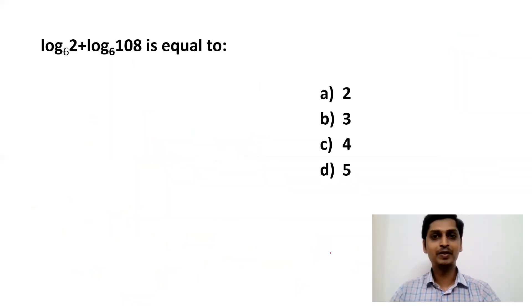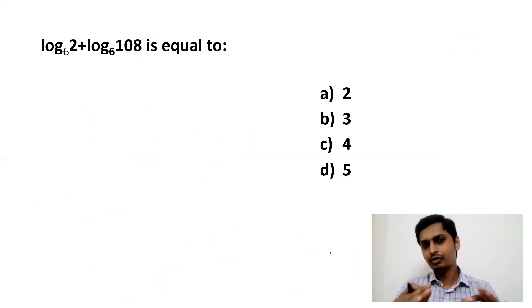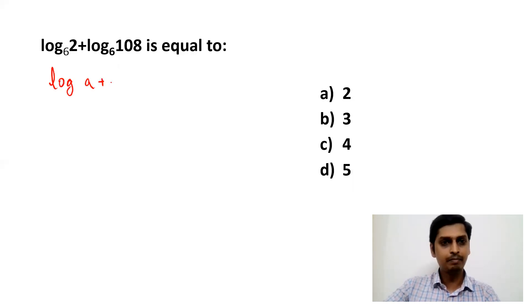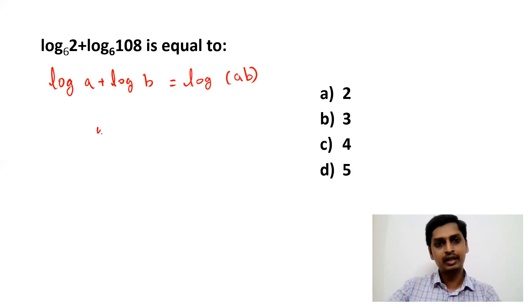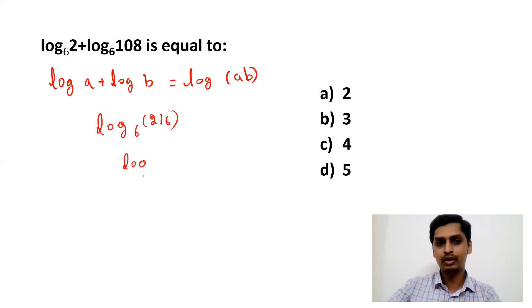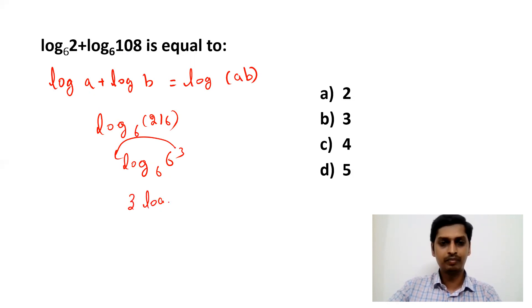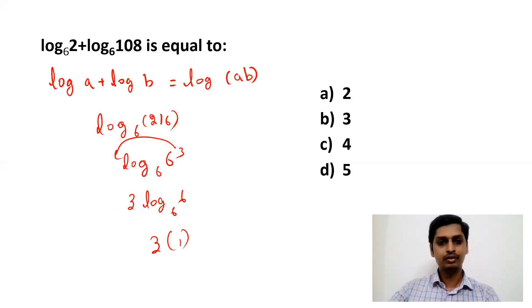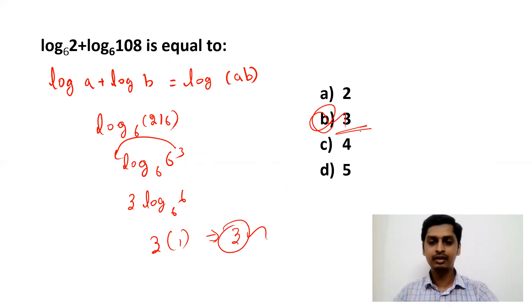Moving to the next question on logarithms: log 2 (base 6) + log 108 (base 6) = ? The property used is log a + log b = log(a × b). So we can write log(2 × 108) = log 216 to base 6. Now 216 = 6³, so log(6³) to base 6 = 3 × log 6 to base 6.